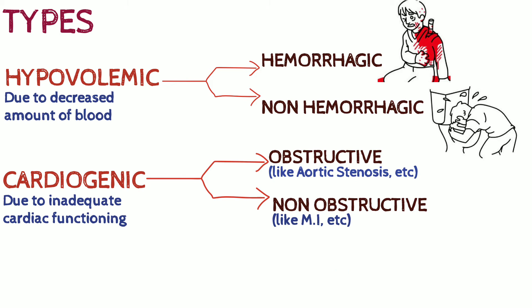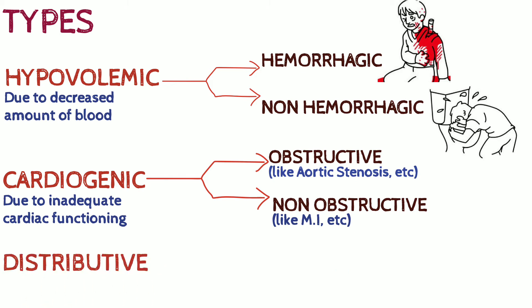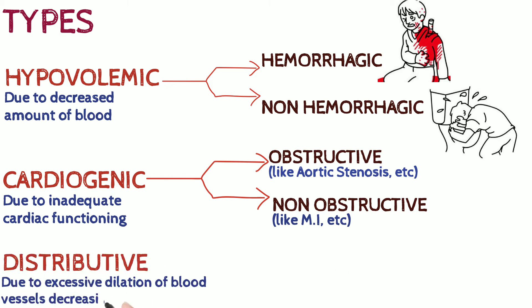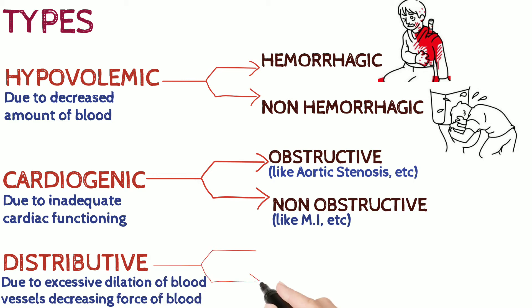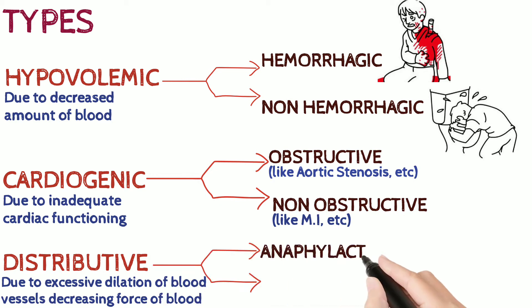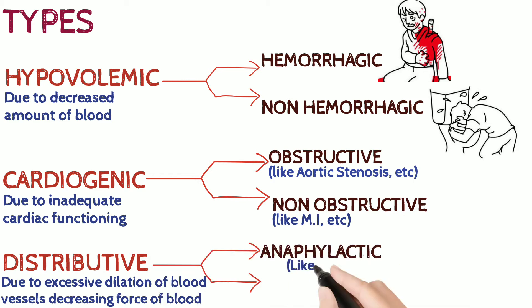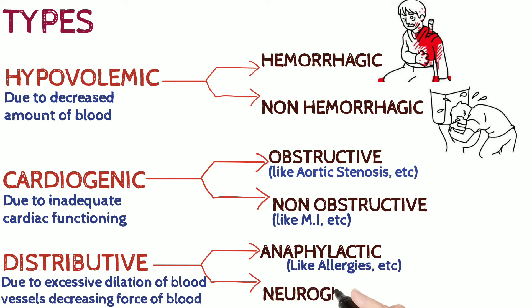And finally, the third type is distributive shock, which occurs due to excessive dilation of blood vessels leading to decreased flow of blood. It is further divided into anaphylactic type and neurogenic type.